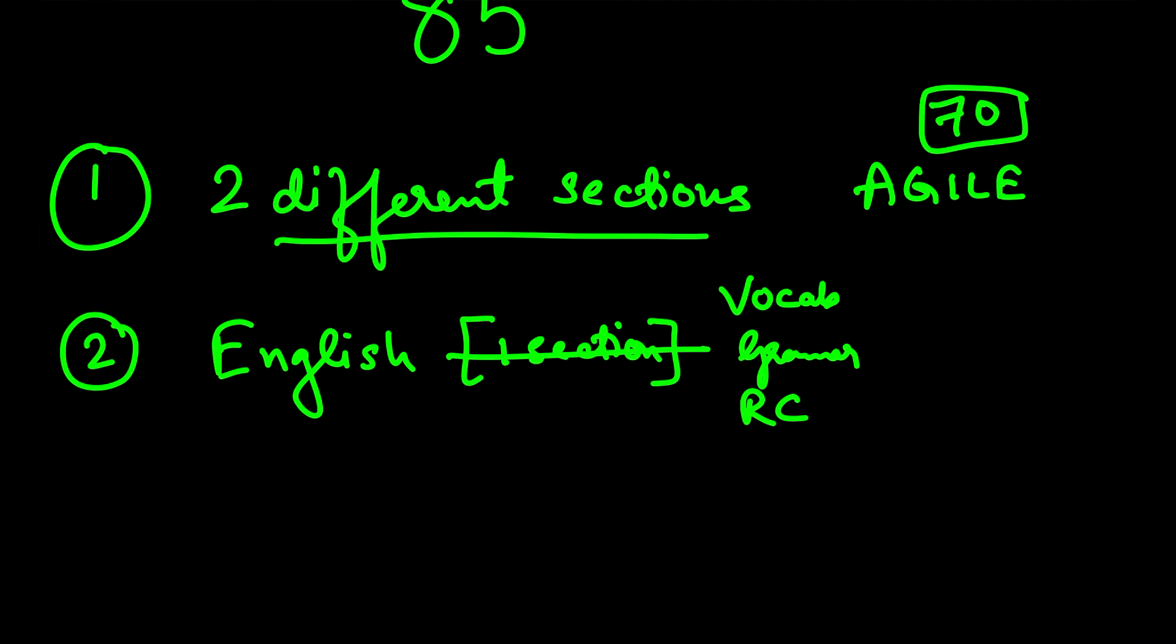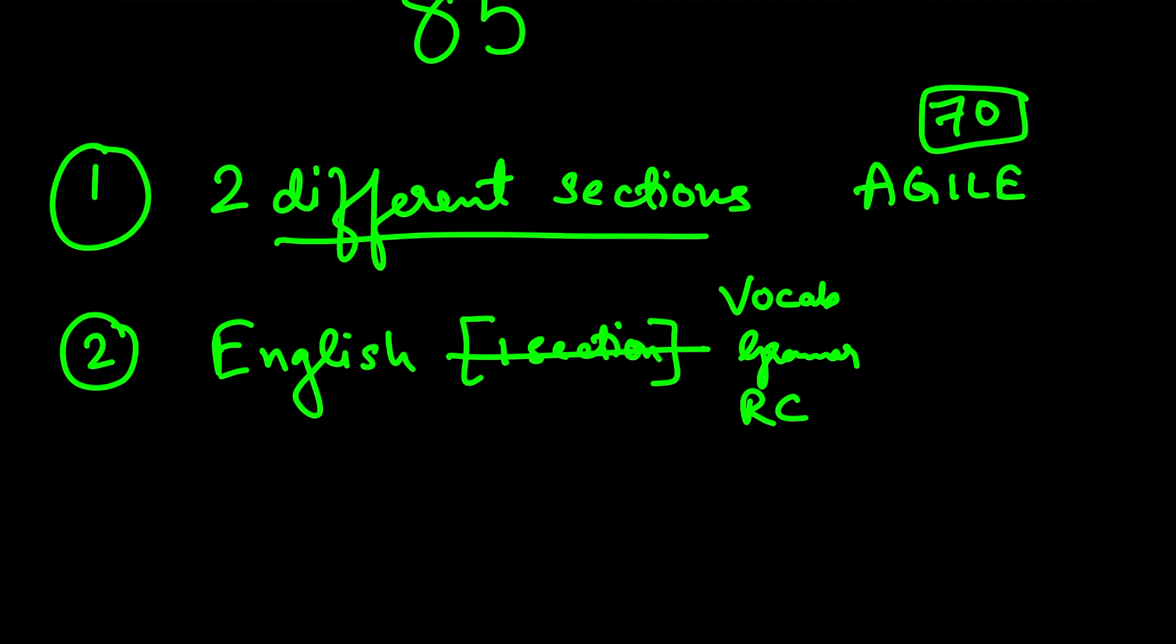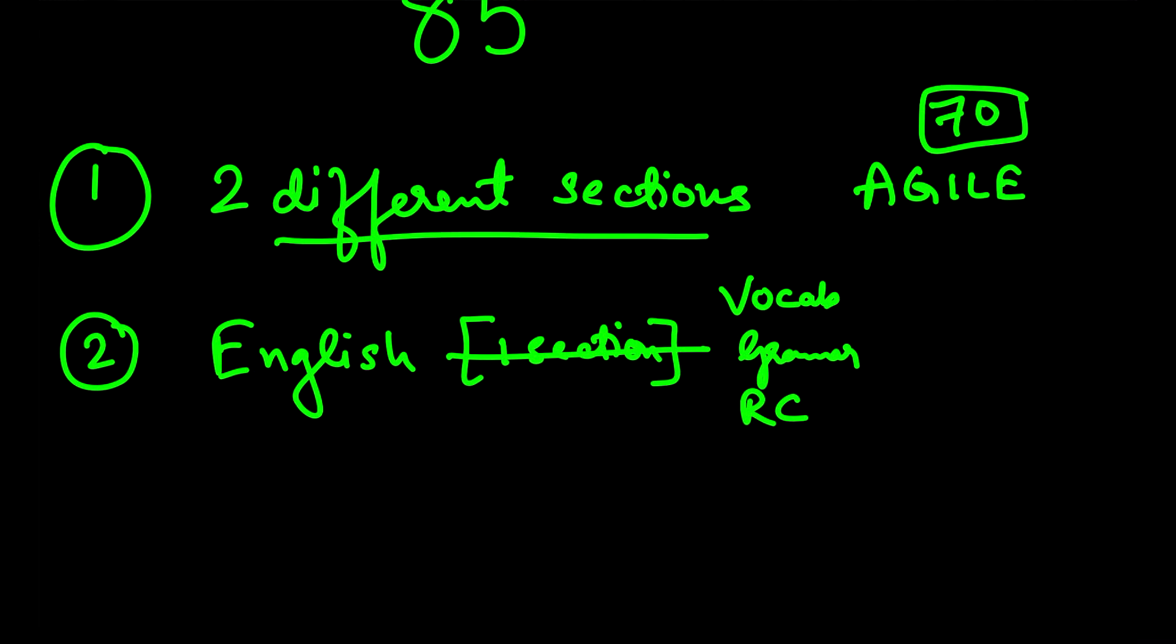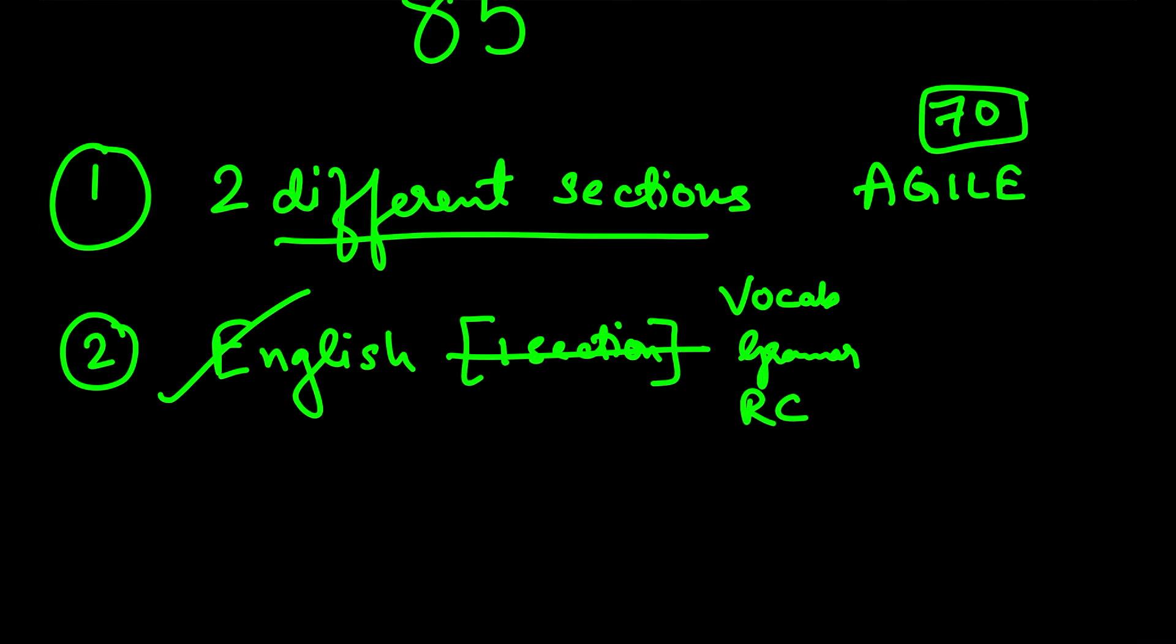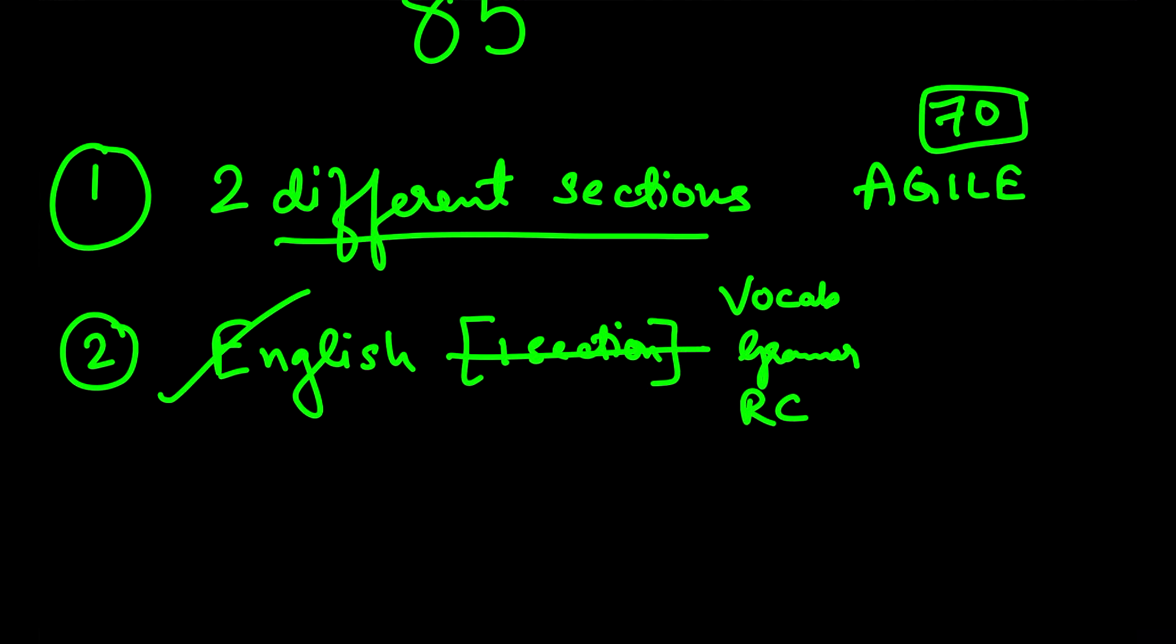When you learn to understand the sentence, then you solve the question using that understanding by the help of quants or DILR. That means that every day you have to assign few minutes or few hours for reading, for learning new stuff, communicating, listening to English talk shows or interviews. Trying to follow how people are speaking in English, because this will not only help you in your written paper but will also eventually help you to secure a seat in your favorite B school, because you have to cross GDPI.